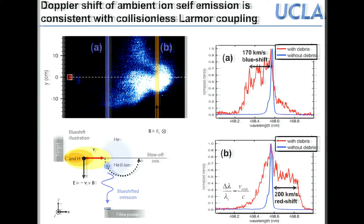The ambient ions speed up, start gyrating in the background field, and when you look further from the target at later times the spectrum is red-shifted — meaning the ambient is now moving upward. Bottom line: the laser plasma is doing exactly what it's supposed to — coupling energy and momentum to the ambient without collisions.